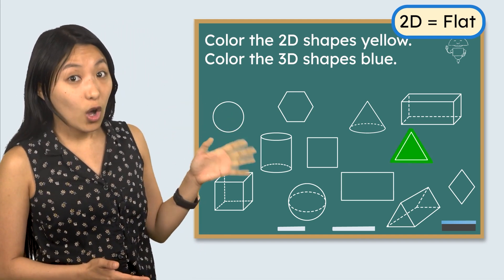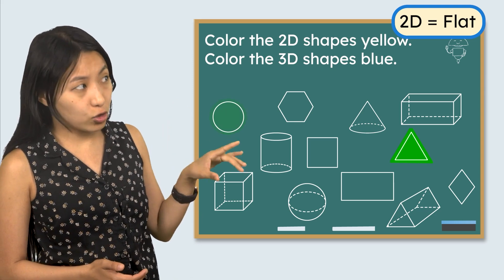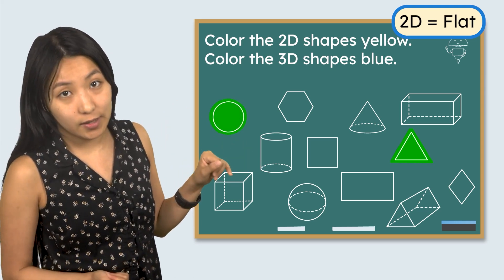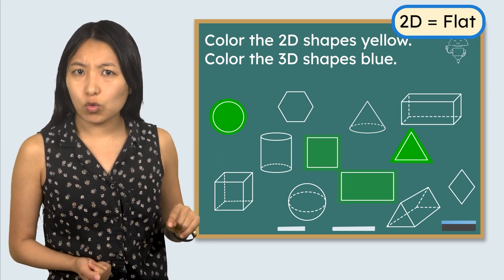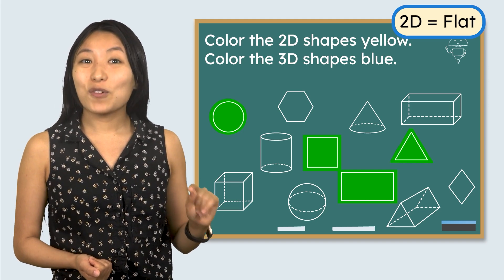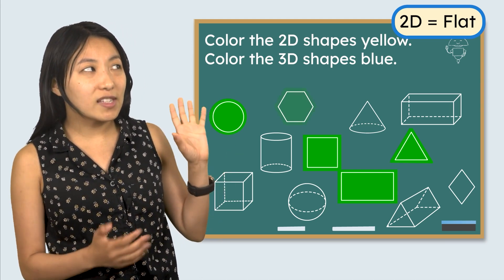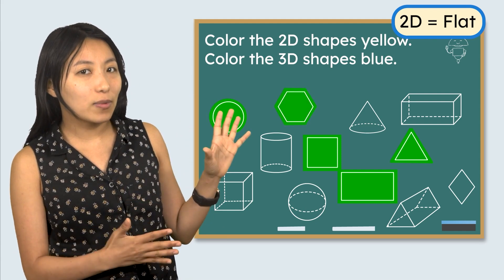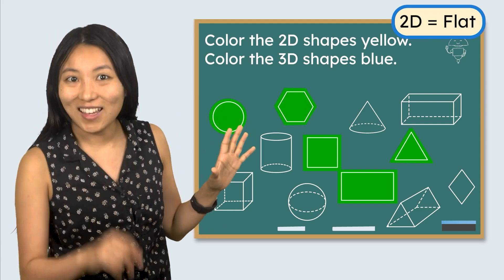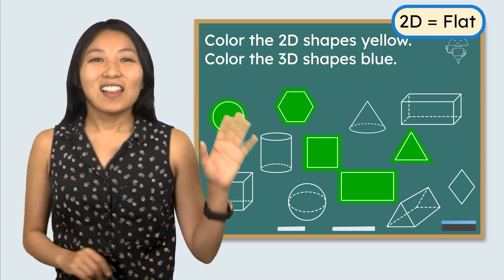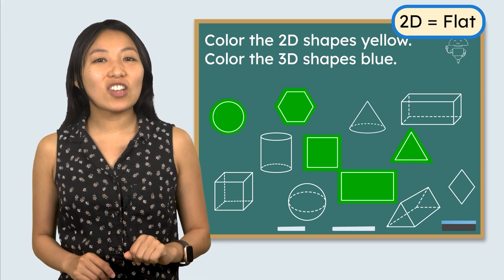I see a triangle with three sides and a circle which has zero sides. We can't forget about square and rectangle. They both have four sides. Do you remember the name of this six-sided shape? It's a hexagon. Let's color all of our 2D shapes yellow.